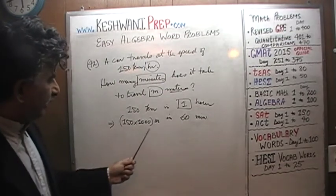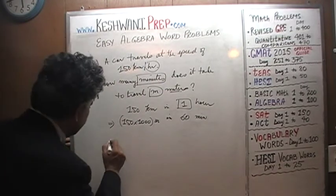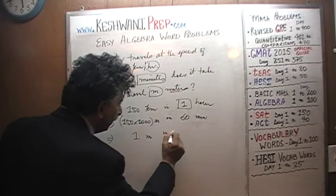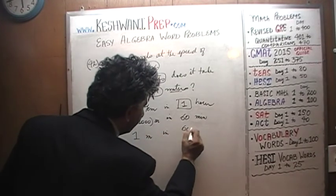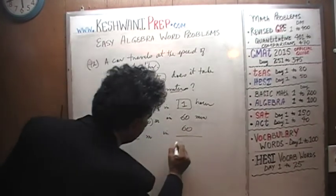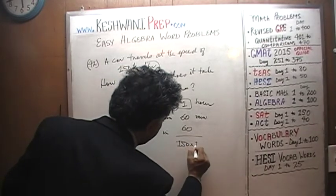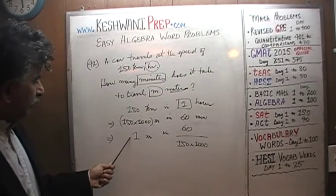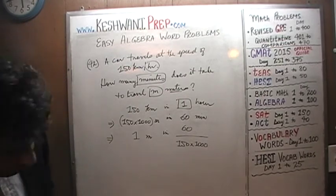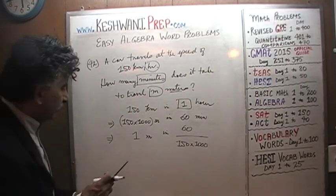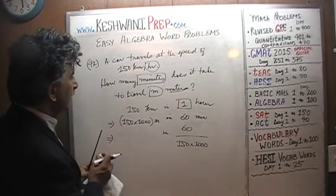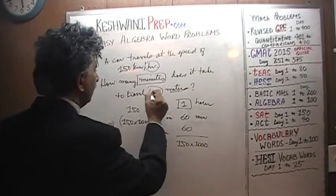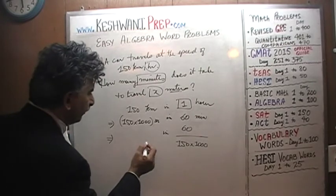So if we can go 150,000 meters in 60 minutes, that in turn implies that we can go 1 meter in 60 over 150,000 minutes. But we don't want to go 1 meter — and since M might get confused with meters, let's call the variable X meters instead so we don't get confused.